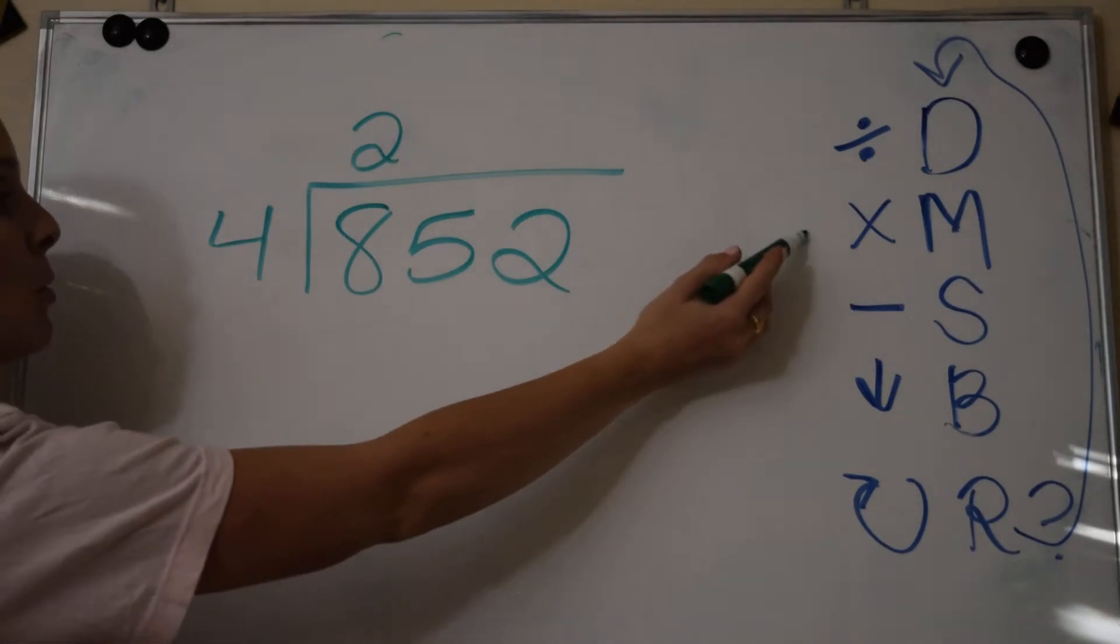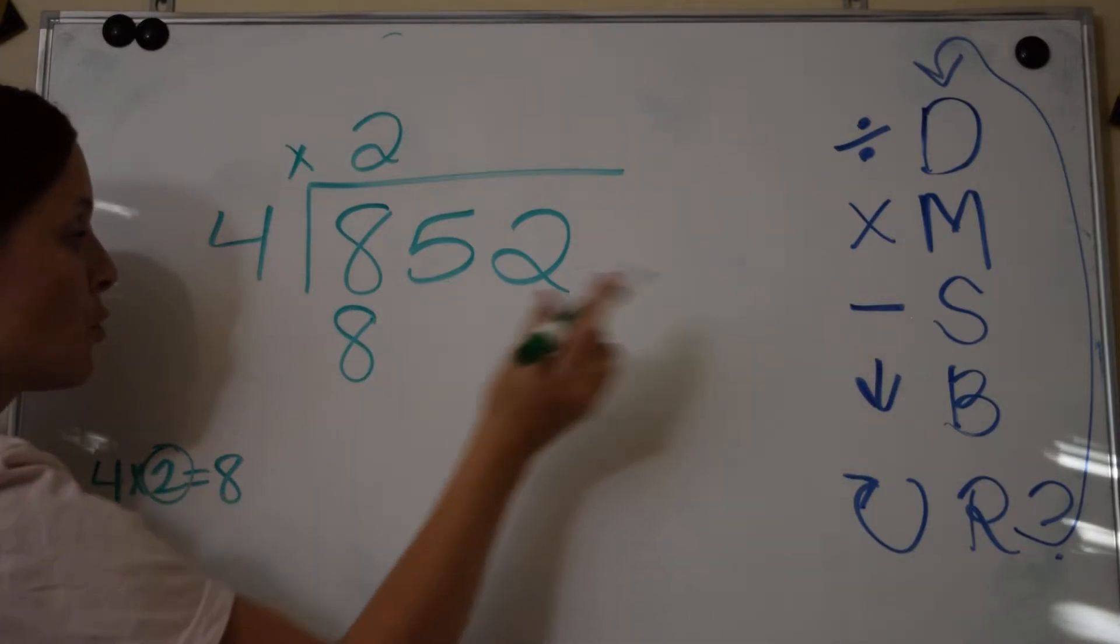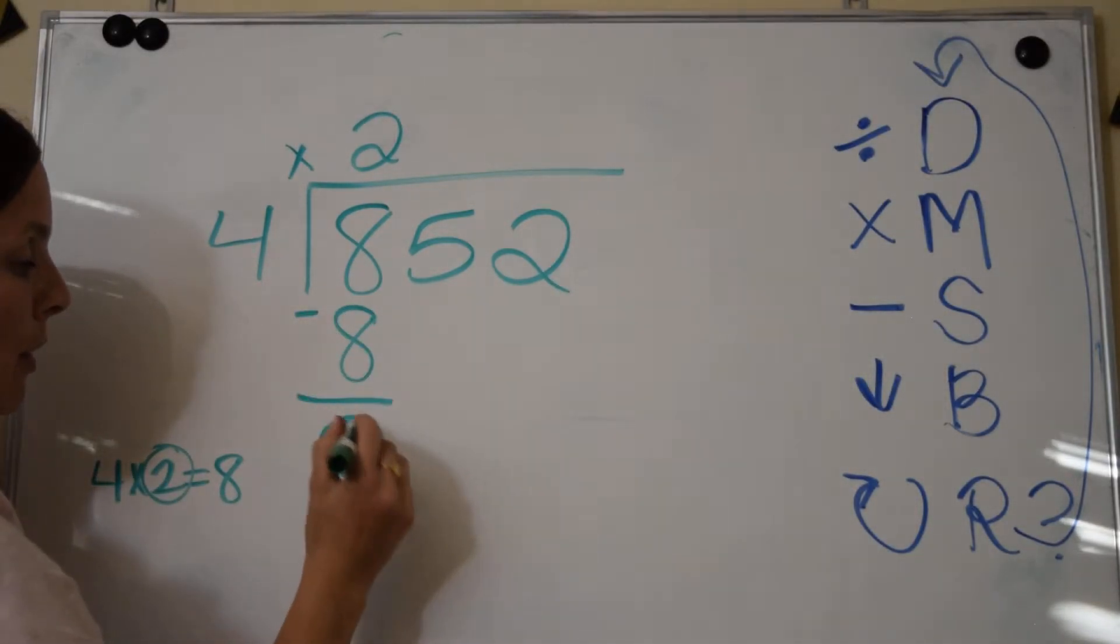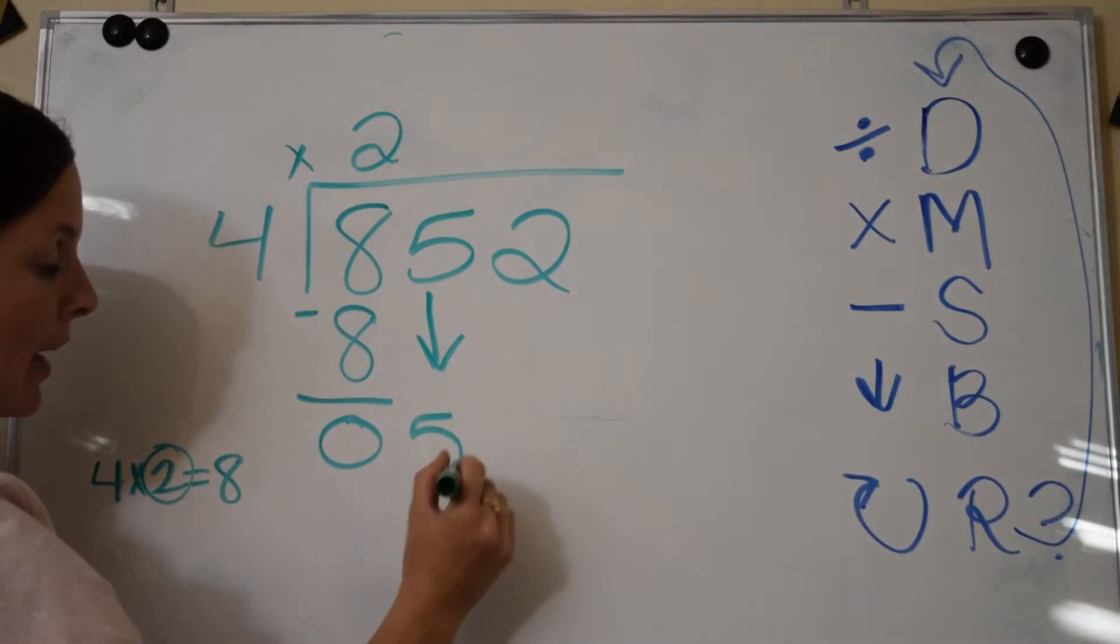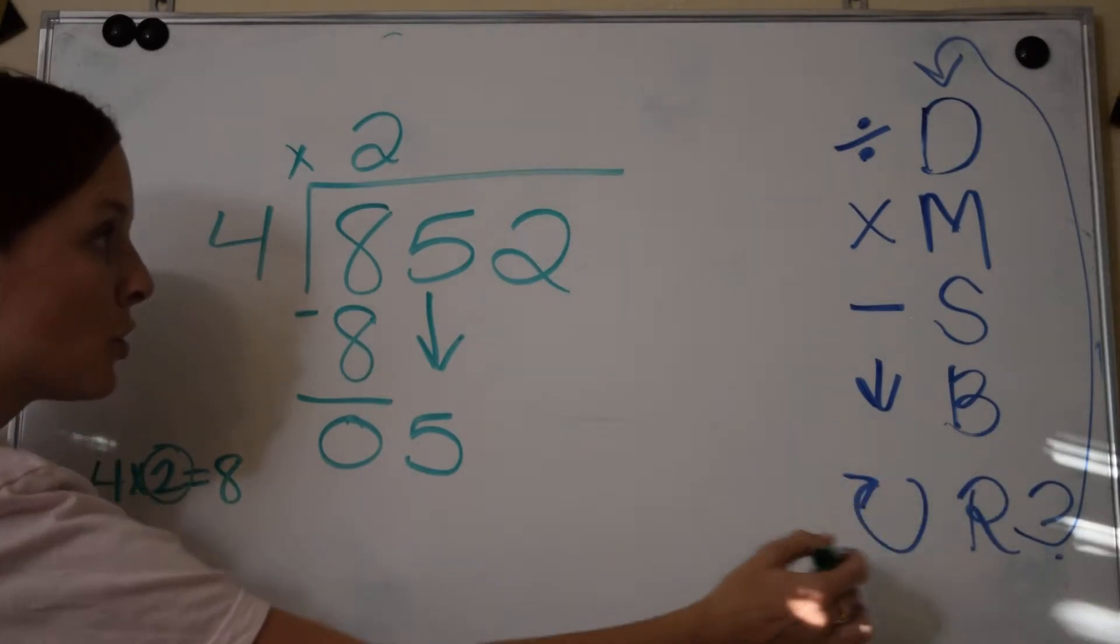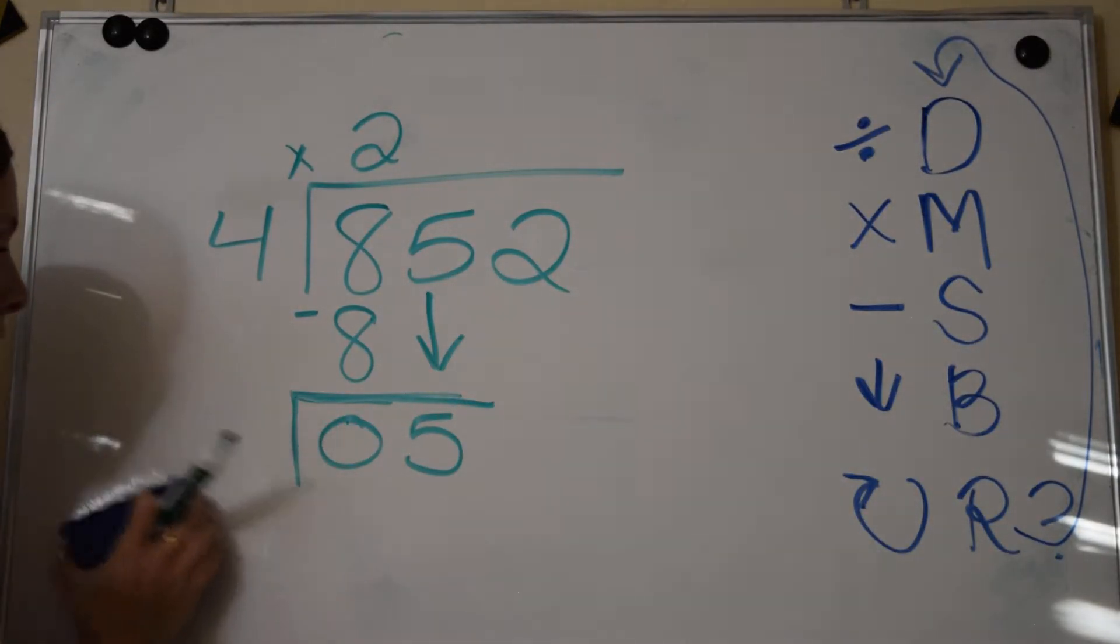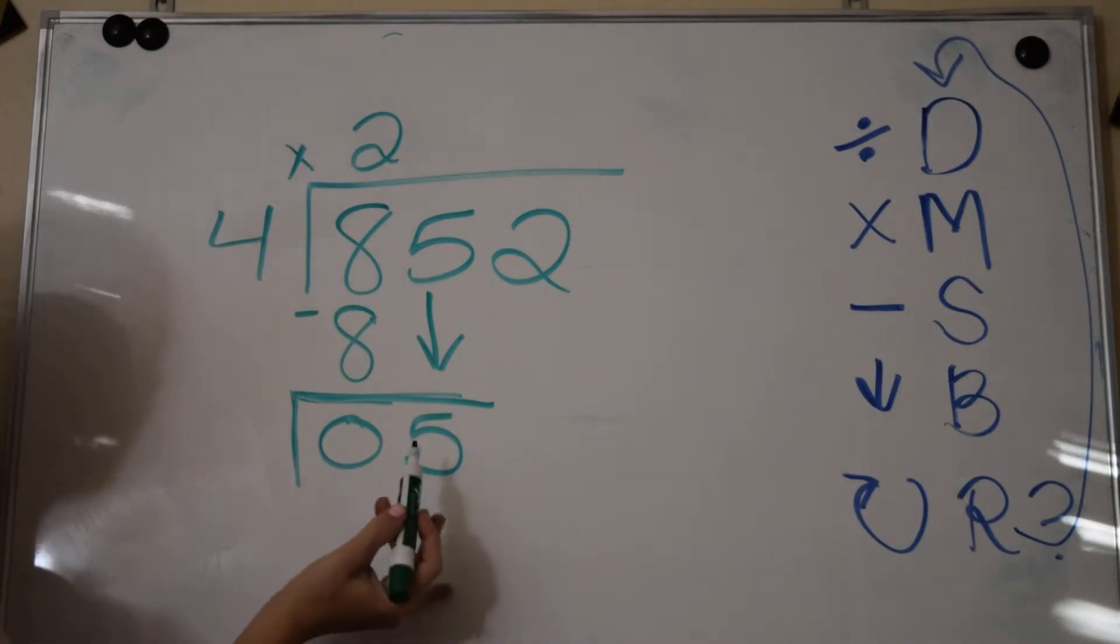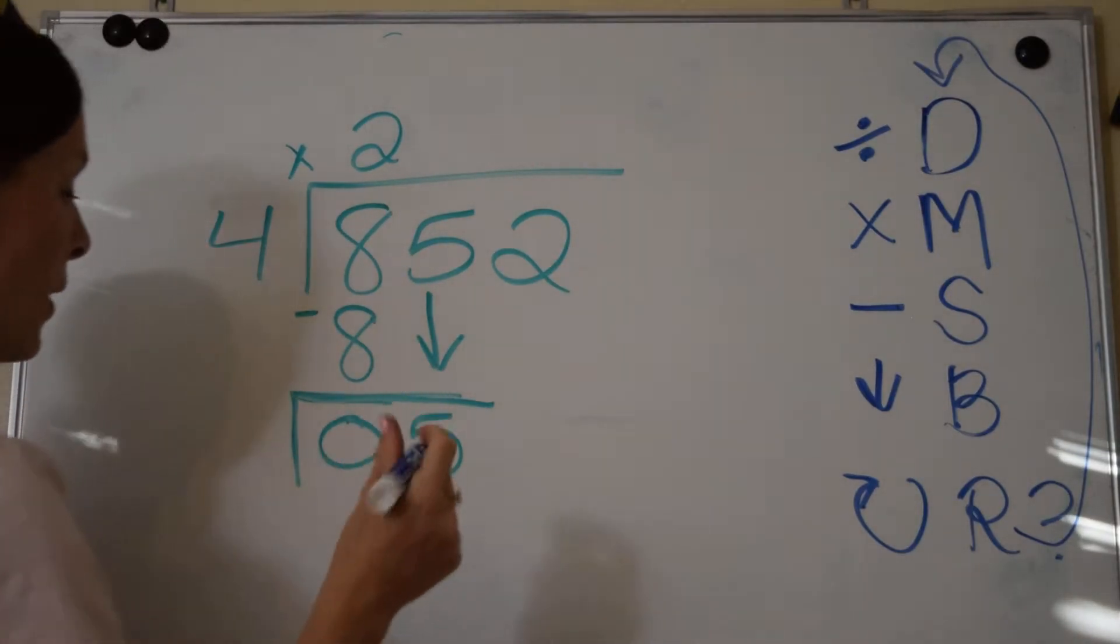Then we multiply: 2 times 4 is 8. Then we subtract: 8 minus 8 is 0. Then we bring down one digit at a time, and it's a 5. Now we repeat, we start over. Now we're working with the 5.